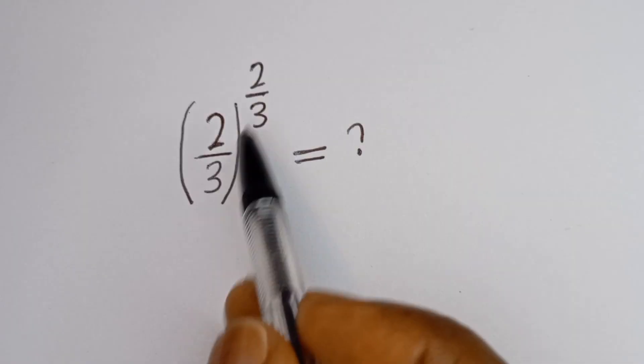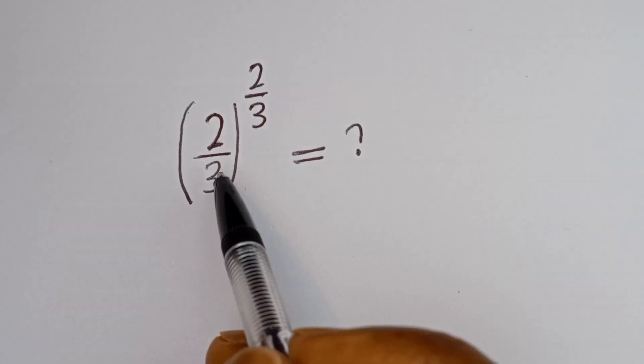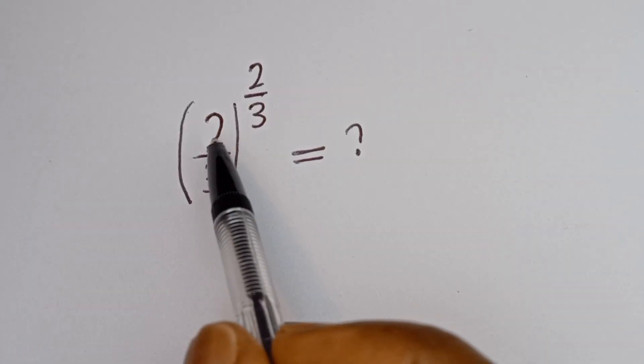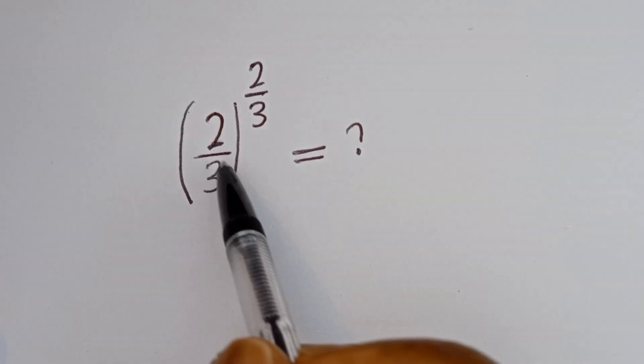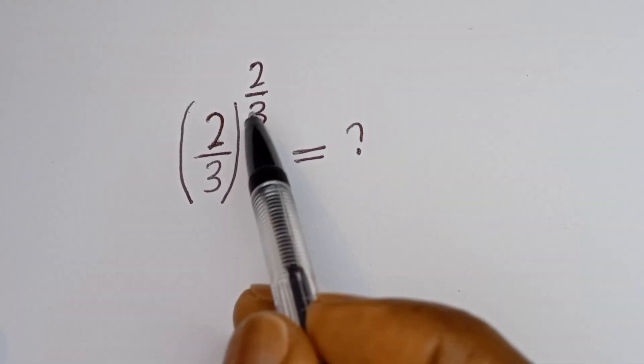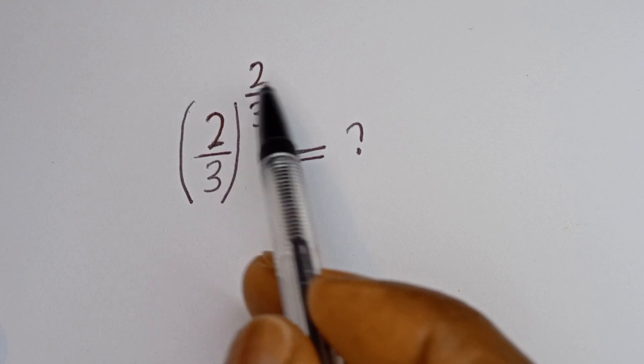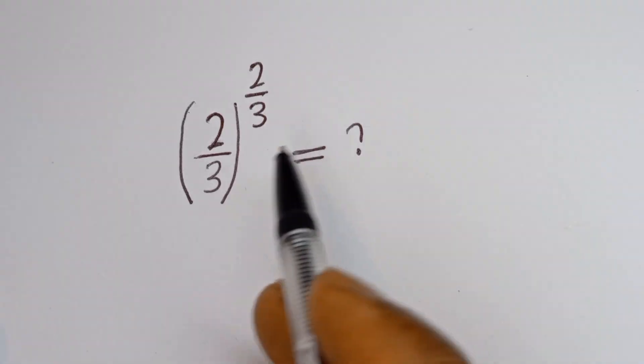Hello, how to simplify this nice math problem without using a calculator: 2 divided by 3, to the power of 2 divided by 3?